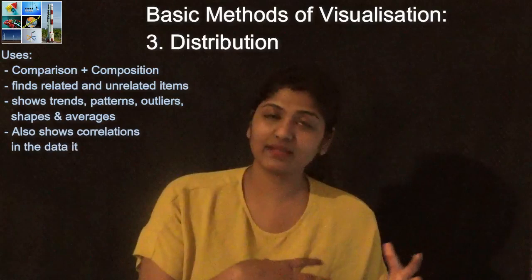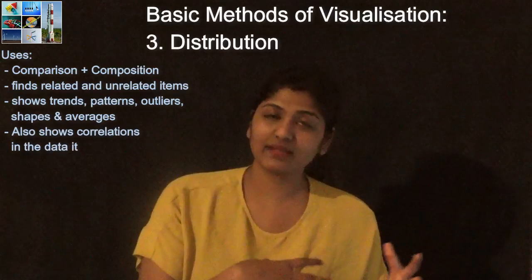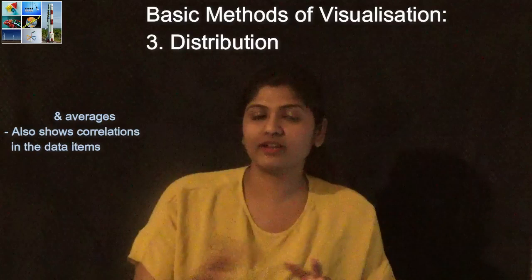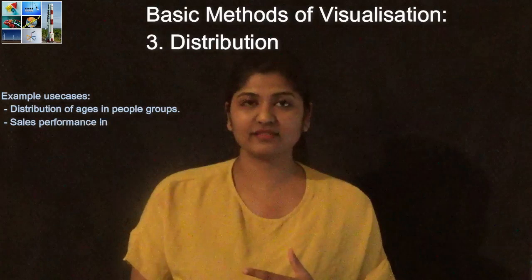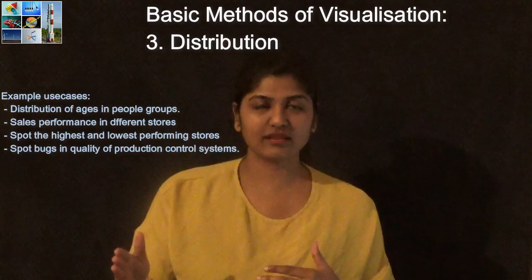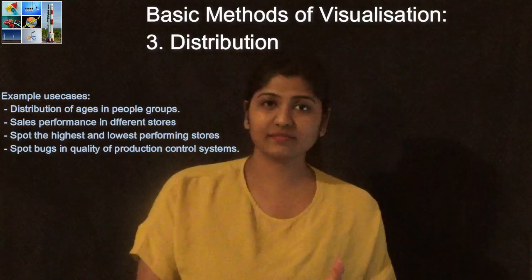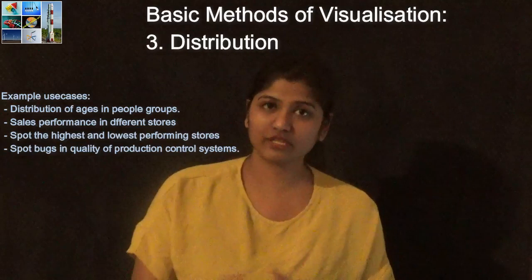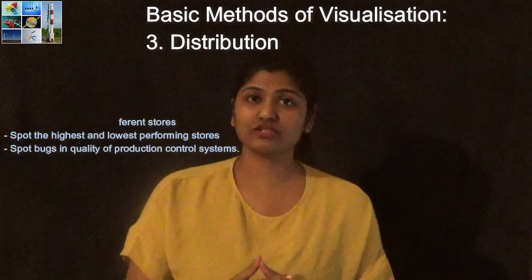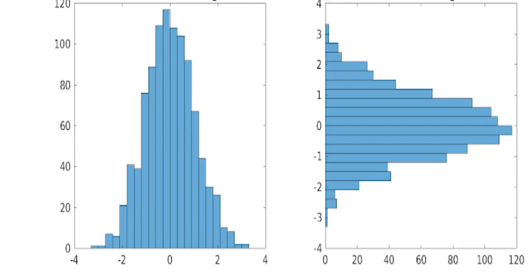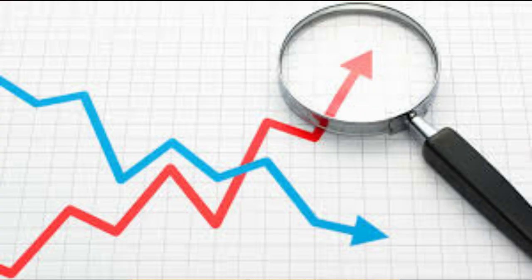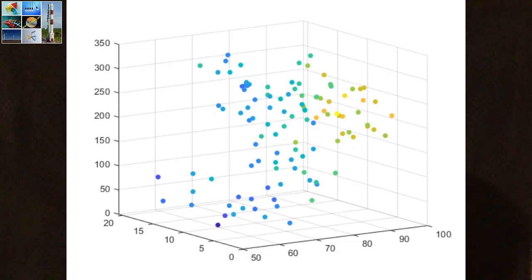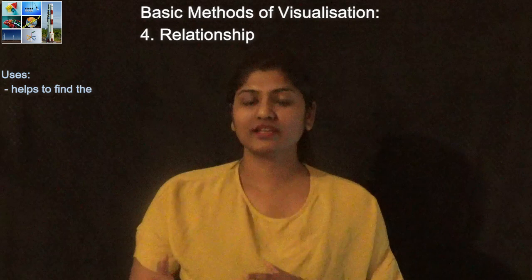Distribution combines the functionality of both composition and comparison. It helps you find related and unrelated items in the dataset, and also trends, patterns, outliers, shapes, averages, and correlations. Example use cases include visualizing the distribution of ages in a population group, visualizing sales performance across different stores, spotting the highest or lowest performing stores, or spotting bugs in quality or production control systems. Commonly used chart types include column and bar histograms, line and area charts, scatter plots, data tables, and map charts.